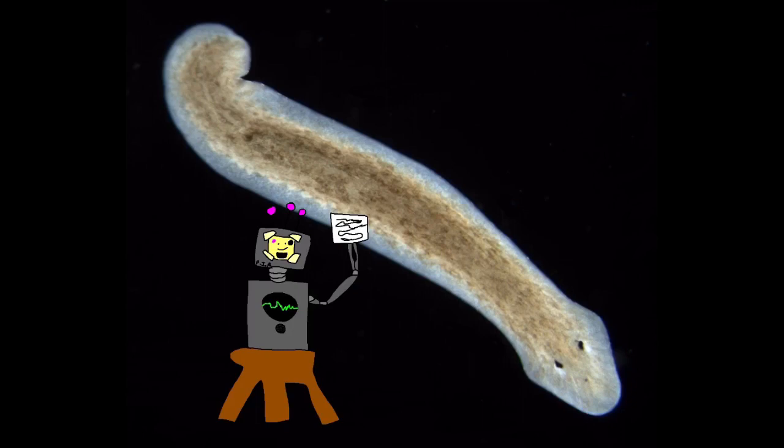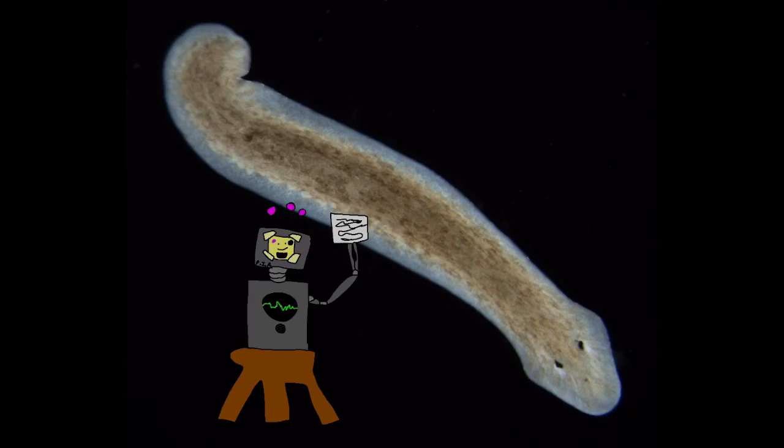Beroidae is a family of ctenophores or comb jellies, more commonly referred to as the beroids. It is the only family within the monotypic order Beroida and the class Nuda. They are distinguished from other comb jellies by the complete absence of tentacles in both juvenile and adult stages. Species of the family Beroidae are found in all the world's oceans and are free swimmers that form part of the plankton.